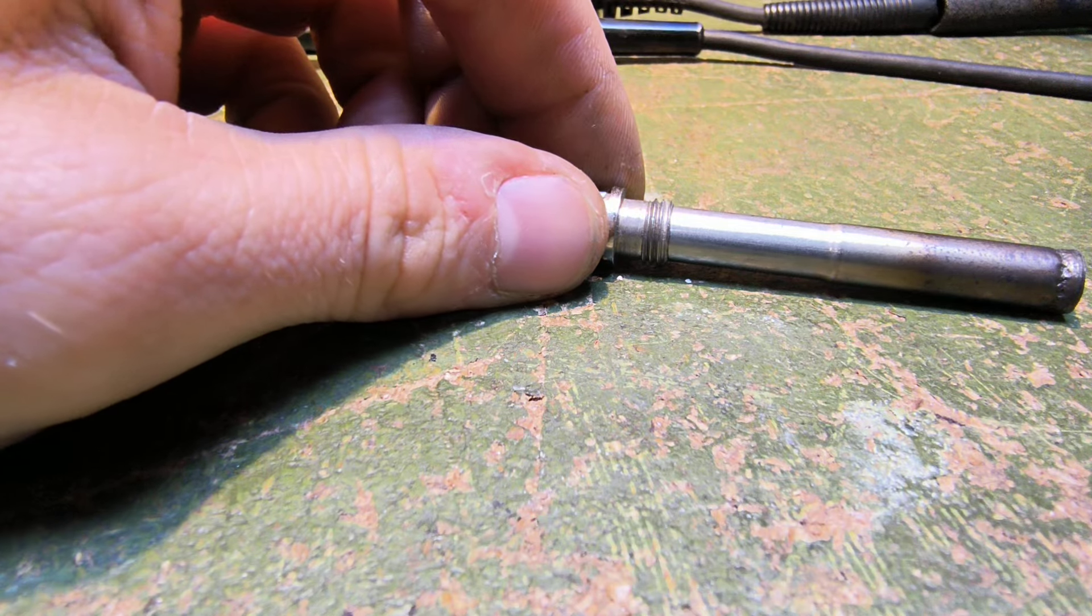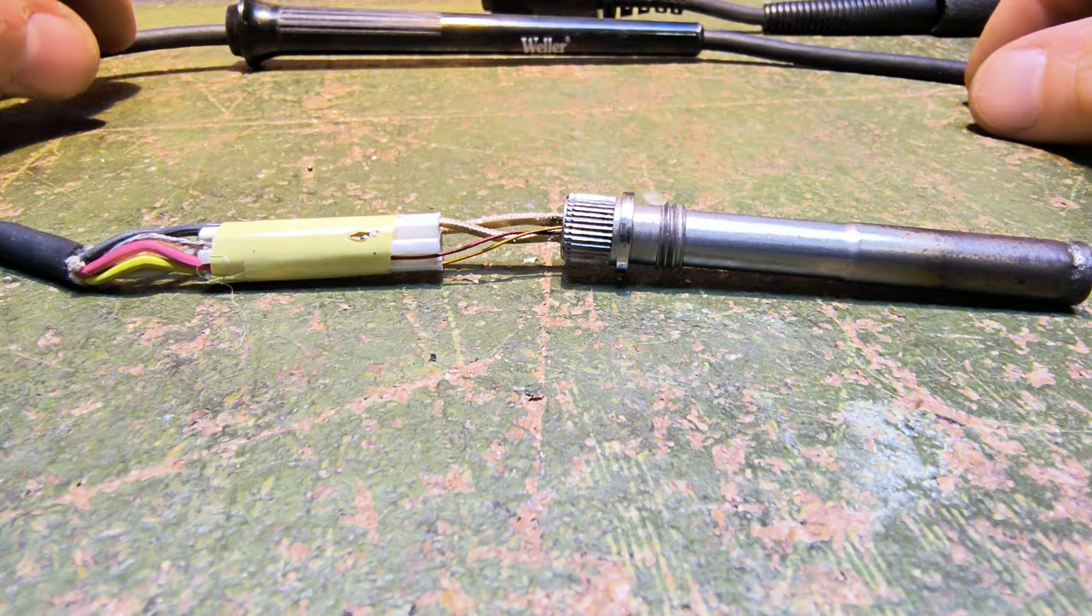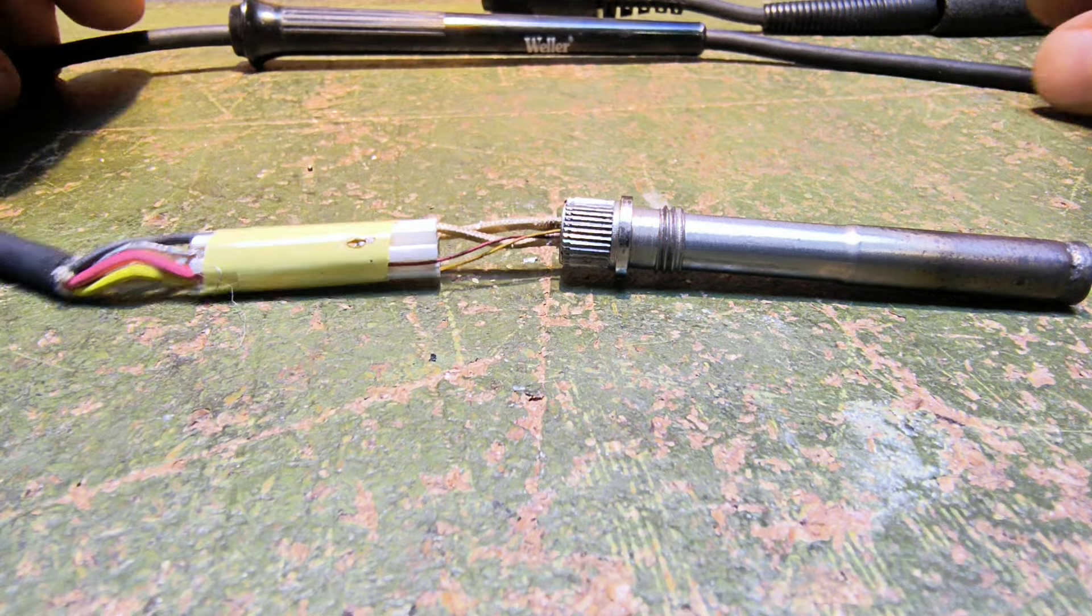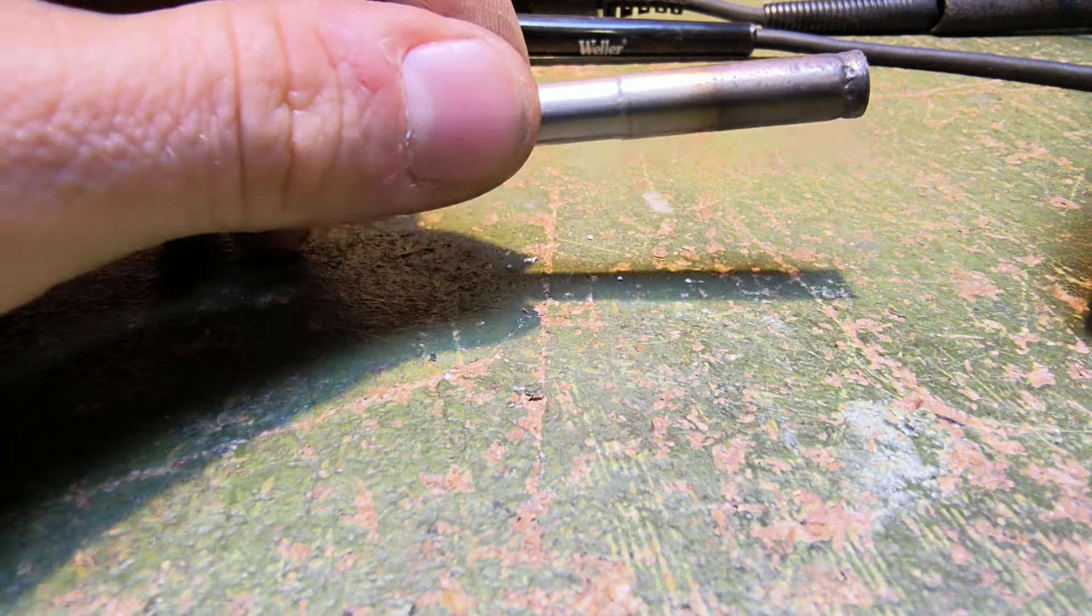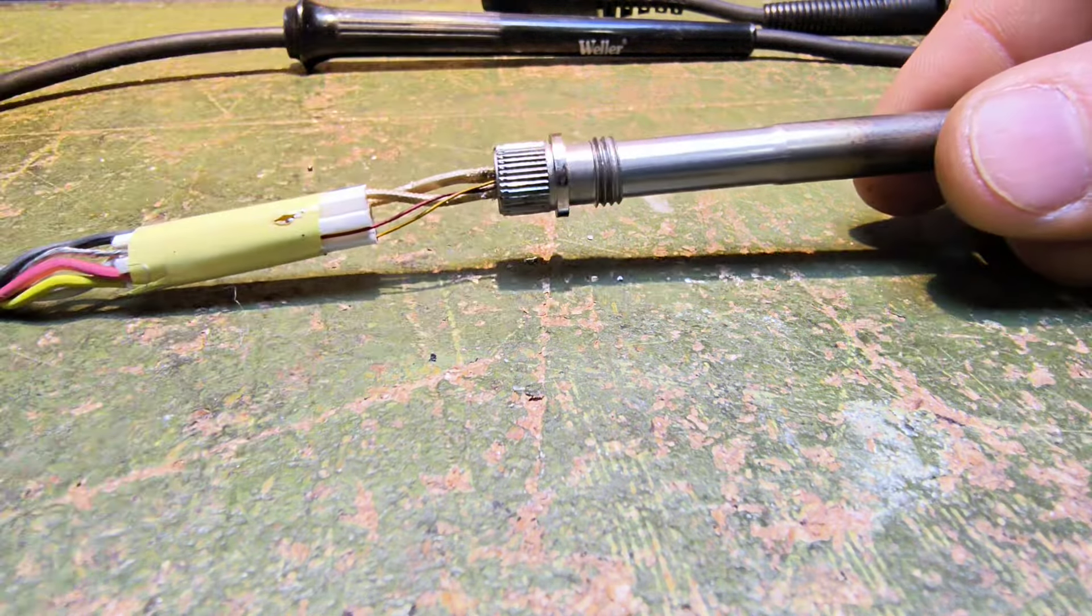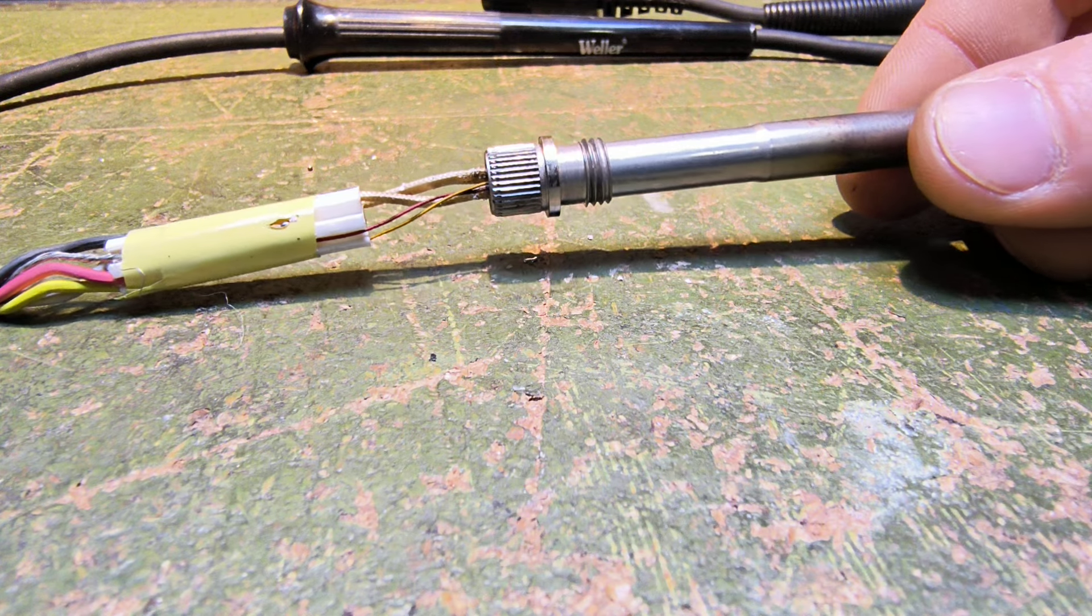Following up from the last video where I was showing how to pull the barrel out of the handle on this thing, I've got it apart now and I see what was sort of jammed in there.